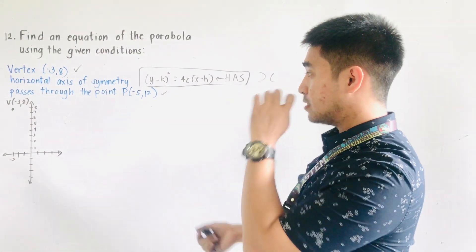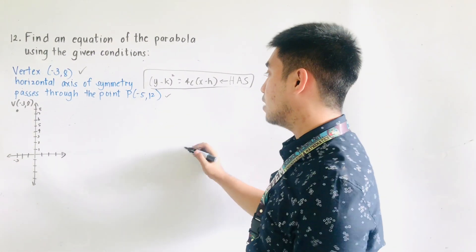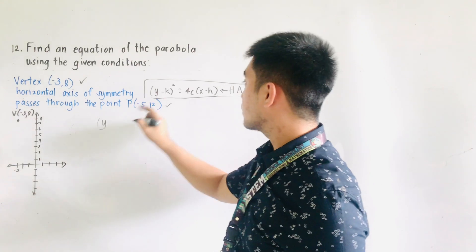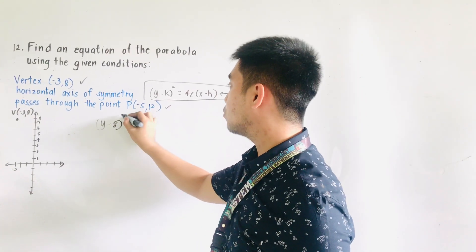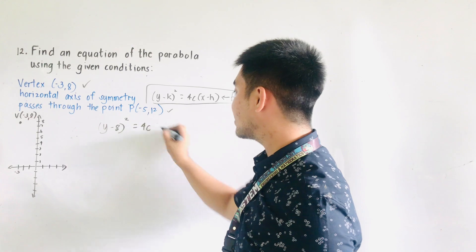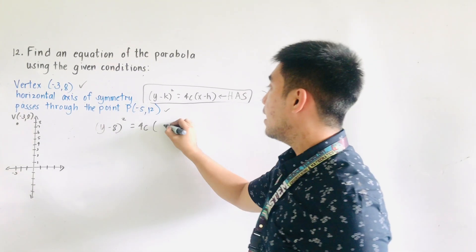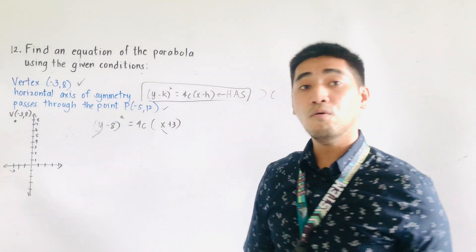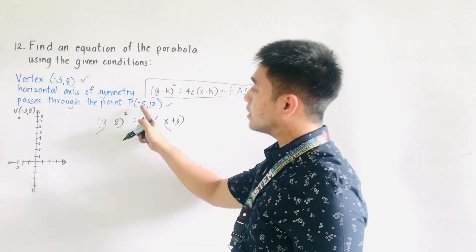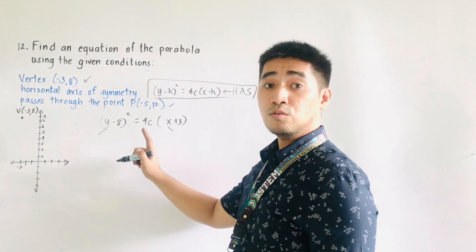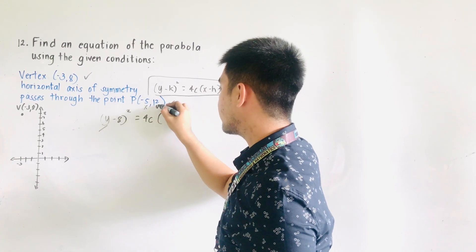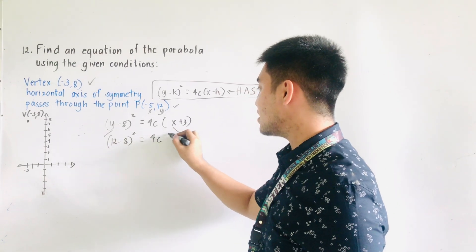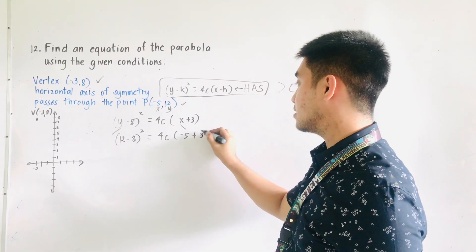It passes through negative 5 and positive 12. We will substitute this to the formula. The vertex gives us y minus k, so the equation becomes: y minus 8, quantity squared, is equal to 4c times x plus 3. Since we do not have the values of y and x yet, we use this point to satisfy the equation. Substituting: 12 minus 8, quantity squared, is equal to 4c times negative 5 plus 3.